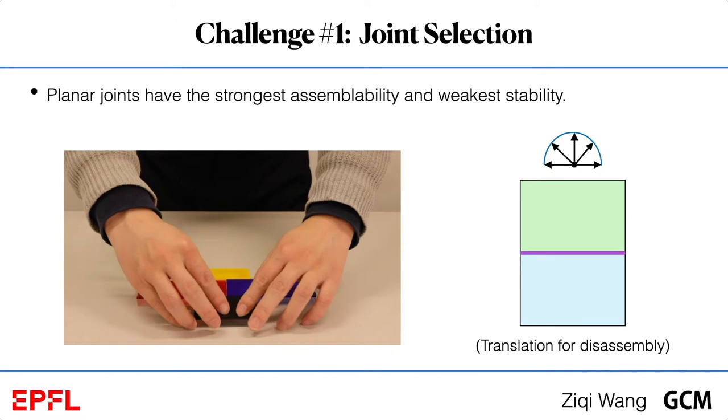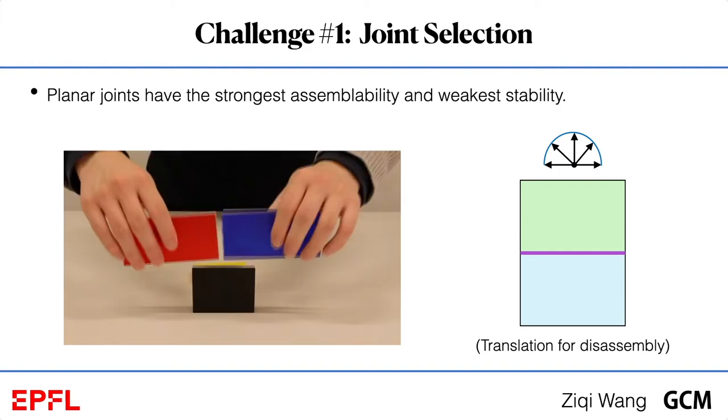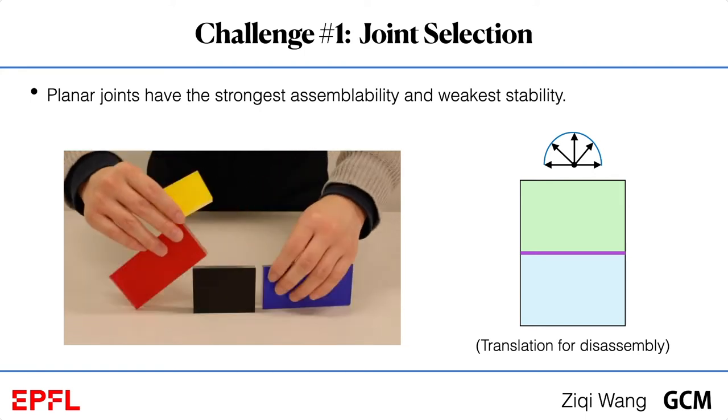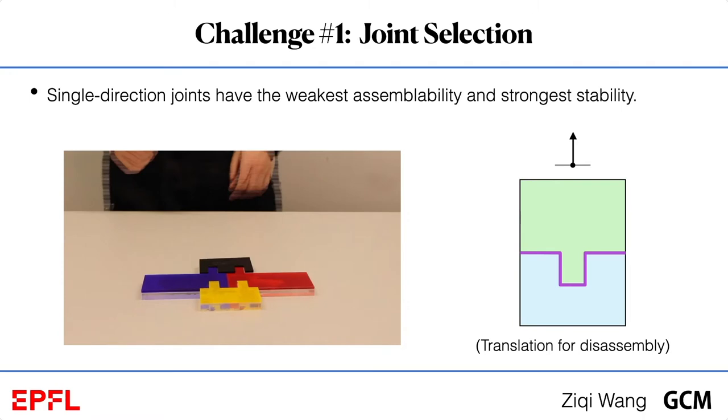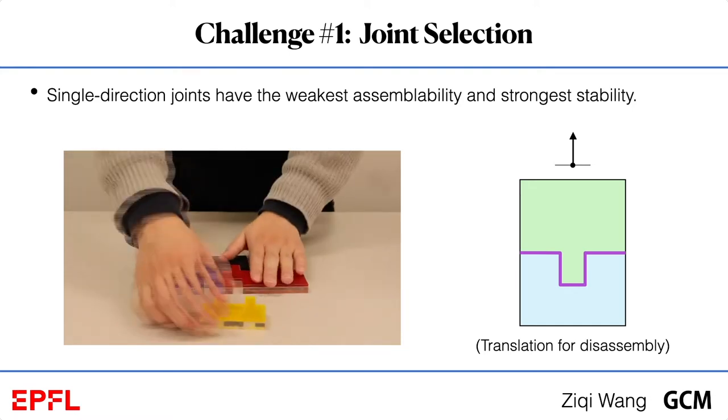Several challenges need to be addressed in this project. First, how to select appropriate joint for each contact. The joint stability is measured by how strict it is to immobilize the relative movement of the two associated parts. The joint assemblability is measured by all collision-free translation motions that separate the two associated parts. We focus on the translational assembly and disassembly motion since it is commonly used and easy to execute. For a planar joint, it has the strongest assemblability but the weakest stability. The four parts model is not stable. For a single direction joint, it has the strongest stability but the weakest assemblability. The four parts model is hard to assemble.